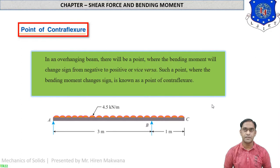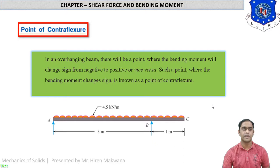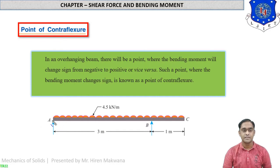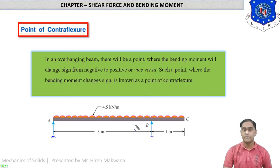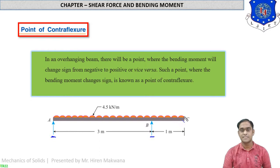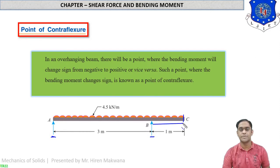The point of contraflexure is applicable to overhanging beams only. You can see in this figure what an overhanging beam is exactly. It is the beam in which the supports are not perfectly at the end points. At point A the support is at the end point, whereas at point B the support is in between the beam, because C is the last end point of the beam but there is no support at point C. So portion BC of one meter length is overhanging on the right side.